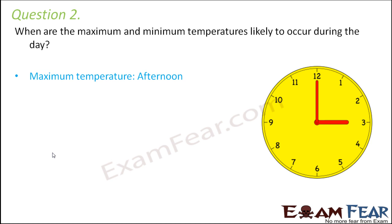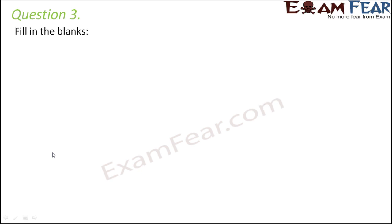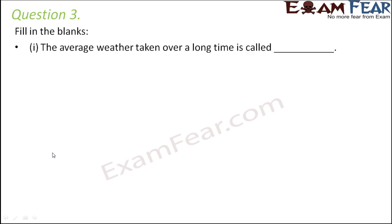Somewhere during the afternoon, the maximum amount of heat reaches from the sun to the earth, and therefore the temperature is maximum at that time. Whereas minimum temperature is observed early in the morning — that is the time when the temperature is at its least.